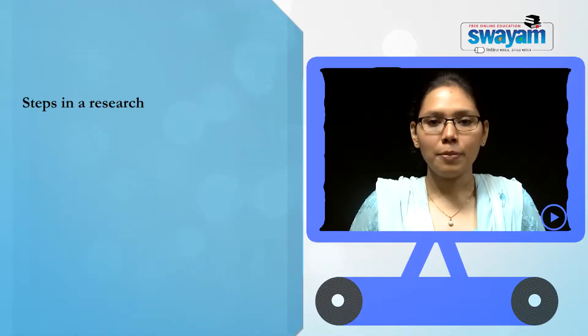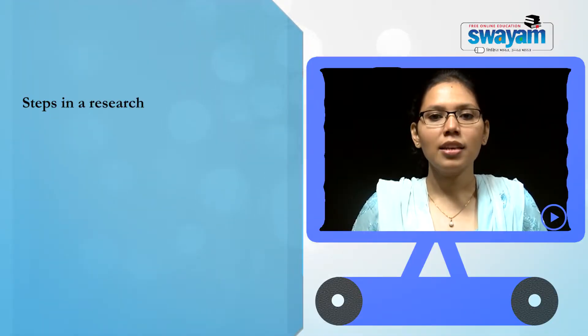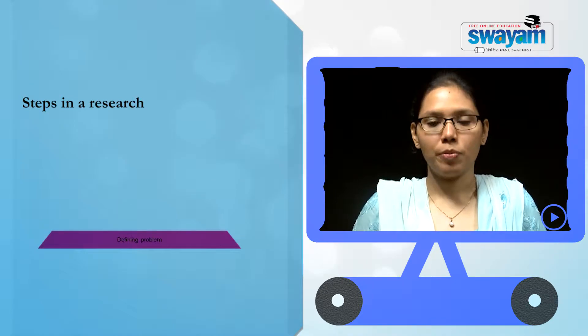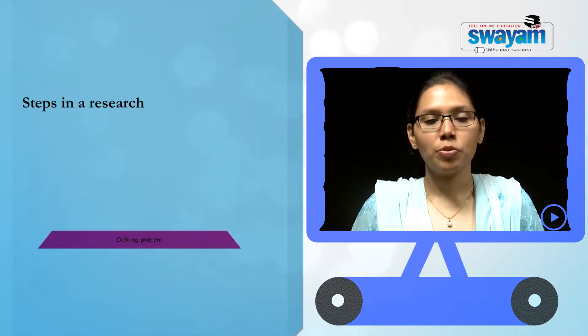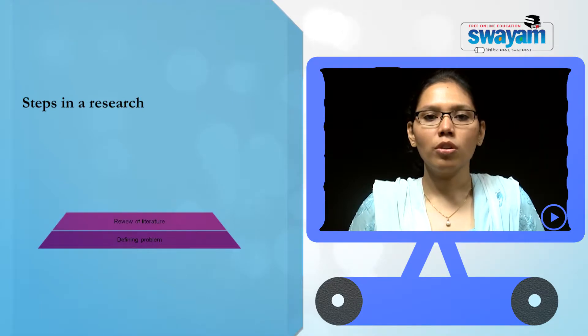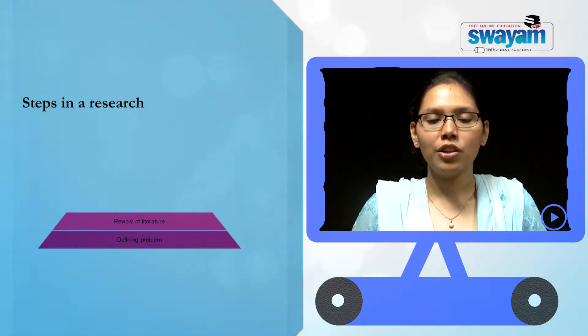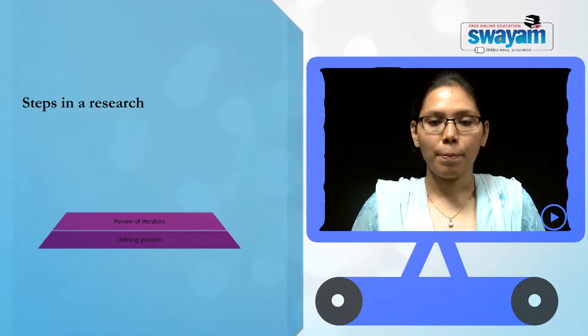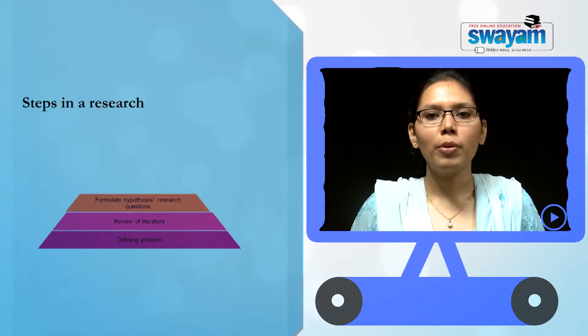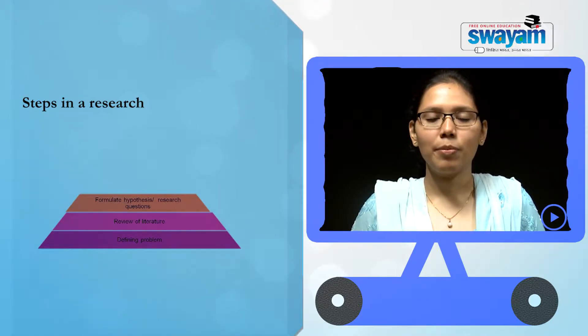In every research in any field there are certain basic steps that every researcher has to take. The first step is defining a research problem. Once he defines a research problem, he goes on to review the available literature on the topic. After reviewing the literature, he goes on to formulate the hypothesis or the research question, as the case may be.